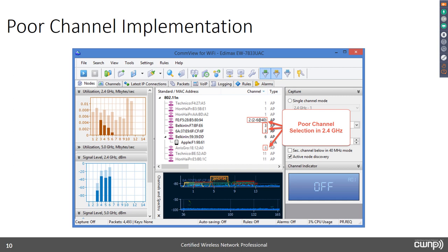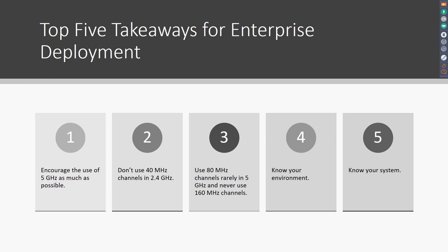Here's an example from CommView for Wi-Fi, a wireless protocol analyzer from TamoSoft. I really like its interface — particularly for packet analysis. In this scan you can see a 40 MHz channel, two APs on channel 3, and one on channel 8. This is the ugliness of consumer auto channel selection, and this isn't an old picture — it may have been taken six months ago. This is the kind of result you get from consumer-grade auto channel selection, and yes, it is a problem.